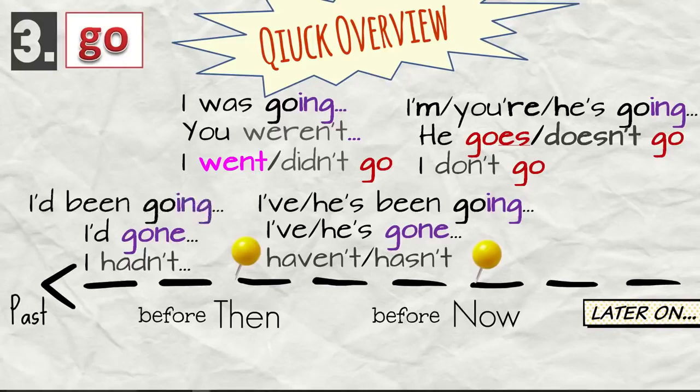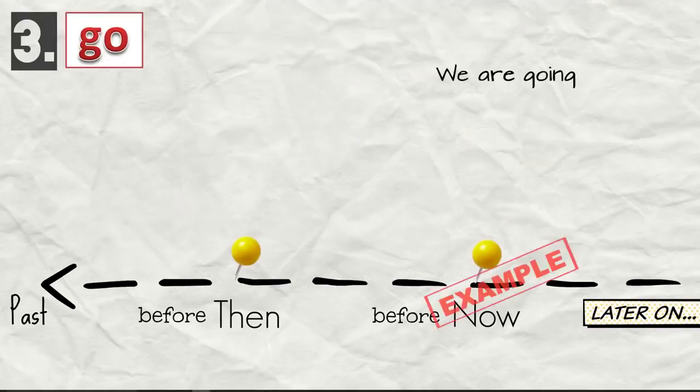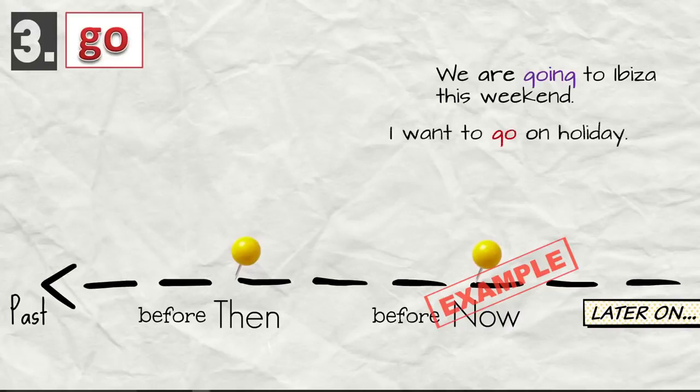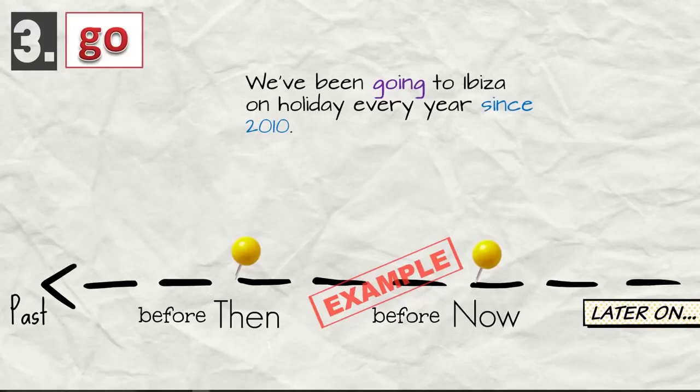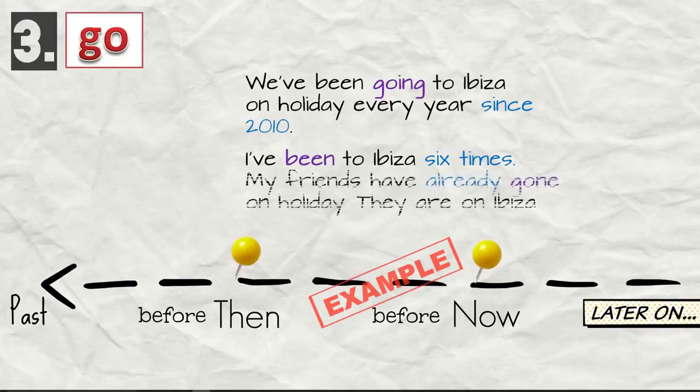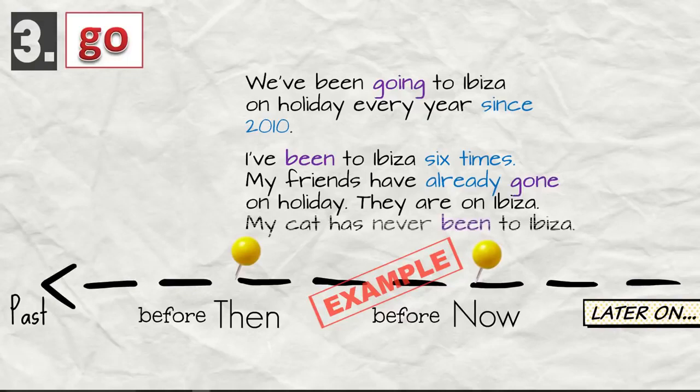So let's have a look at the examples again. We are going to Ibiza this weekend. I want to go on holiday. I don't often go on holiday. My cat never goes on holiday. We've been going to Ibiza on holiday every year since 2010. I've been to Ibiza six times. My friends have already gone on holiday. They are on Ibiza. My cat has never been to Ibiza.